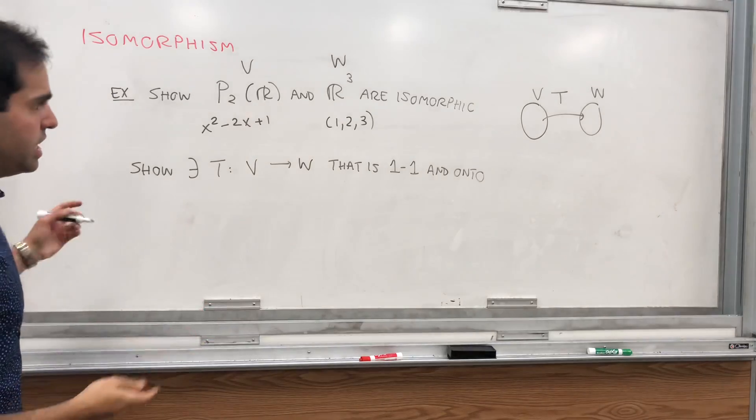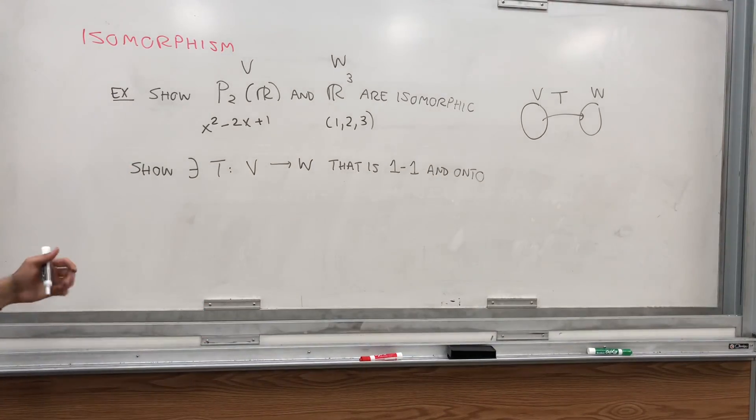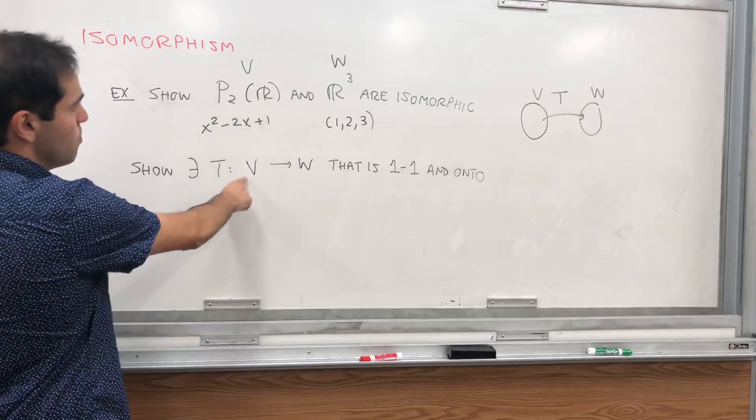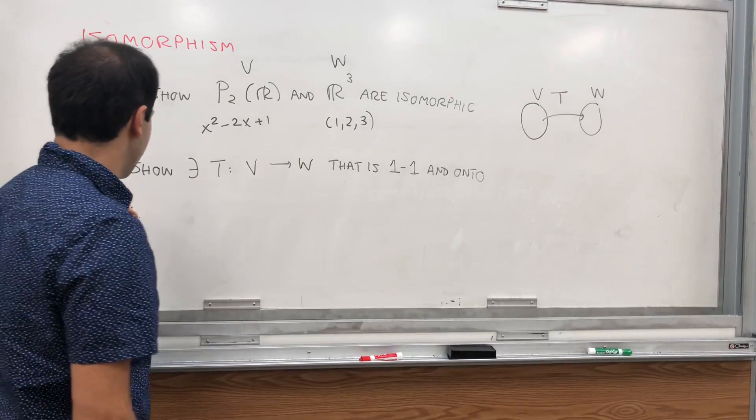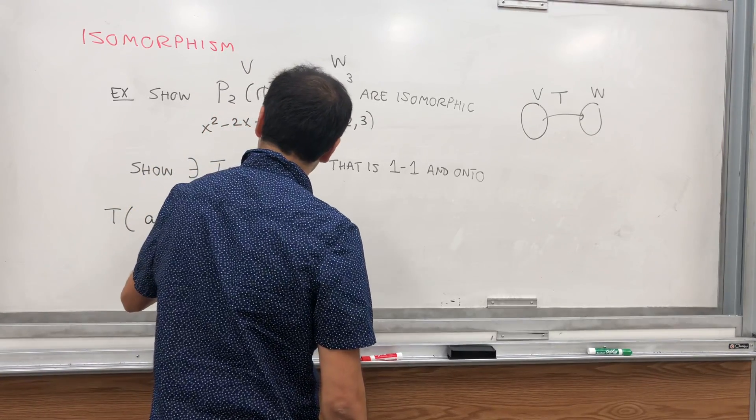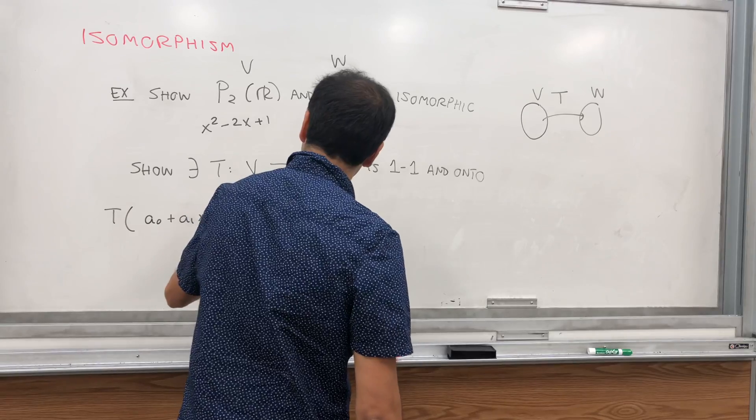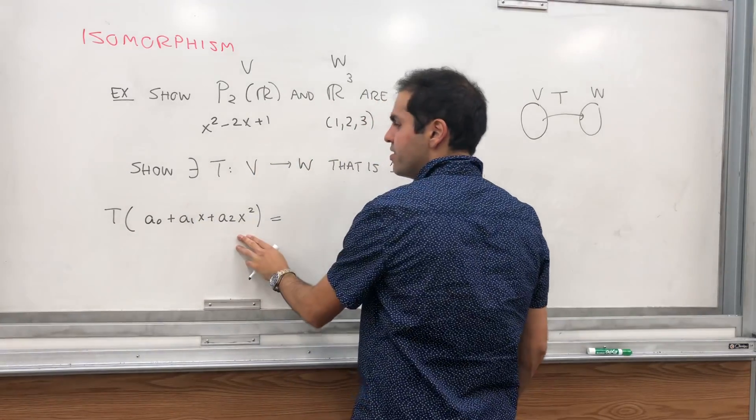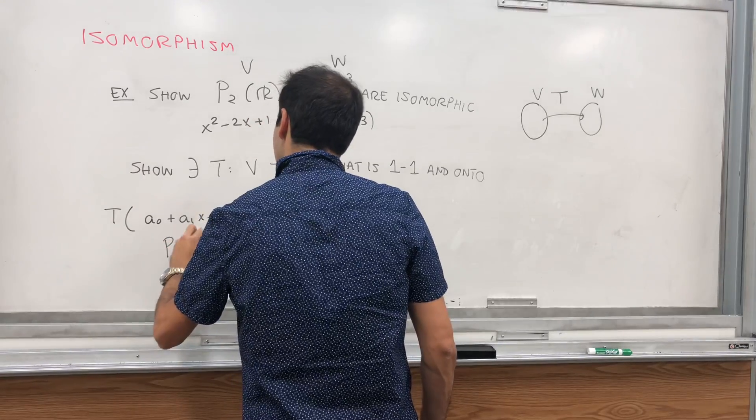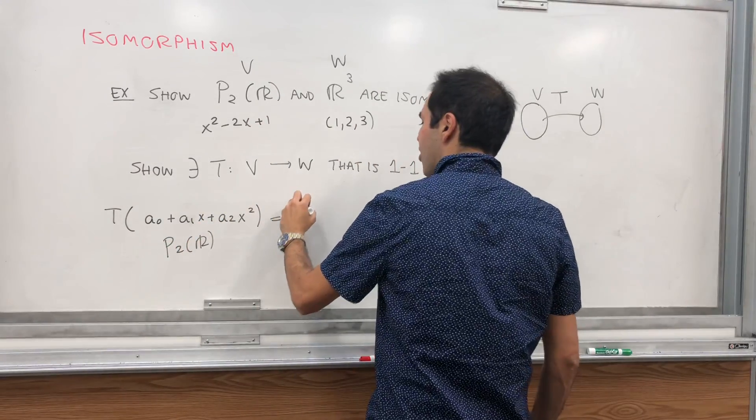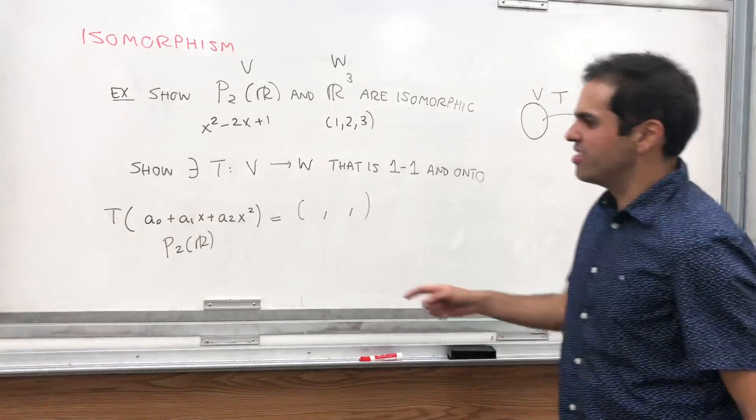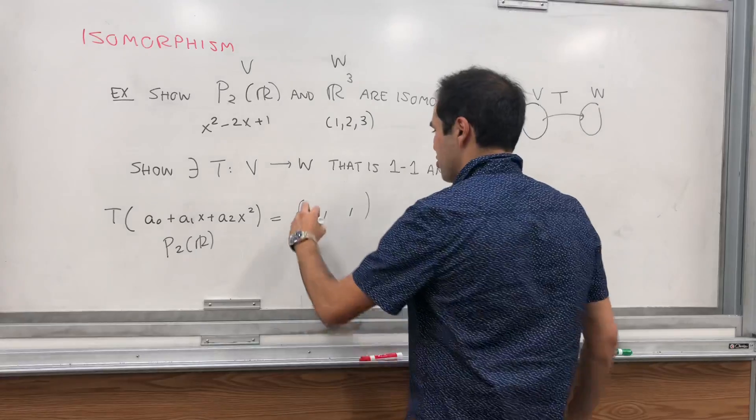So what should this T do? Well, there's a very natural example. T is from P2 to R3, so it takes a0 plus a1x plus a2x squared. This is the input of T, and we want an output that's in R3. Well, a very natural way to do this is just to take (a0, a1, a2).